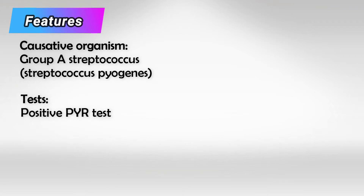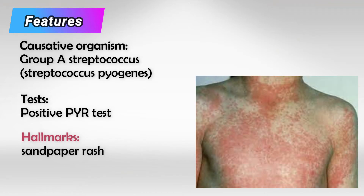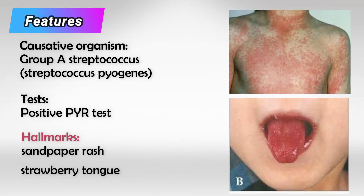There are two highly characteristic and very specific features. The first is sandpaper rash on the body, which mainly affects the folds such as the axilla and groin, and this is highly contagious. The other characteristic is strawberry tongue. Exam makers love to ask about these two features.